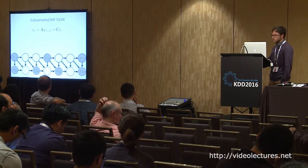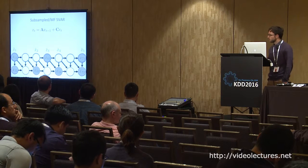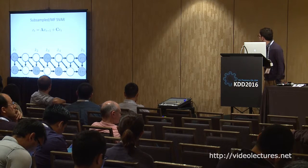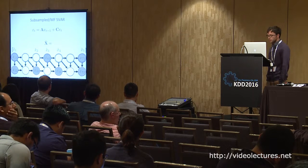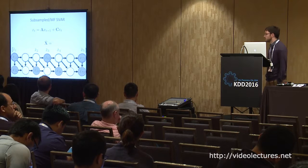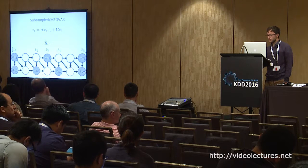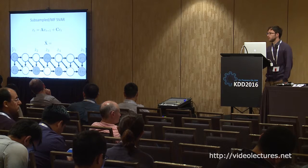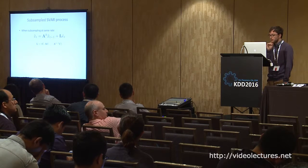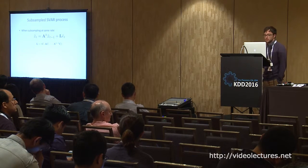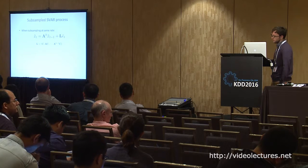In the subsampled case, we collect all observed data and call it X̃, where X is the true unobserved data. Combining them gives us the full observed dataset, capital X̃. In the particular case where all time series are subsampled at the same rate, we can rewrite the process evolution as: X̃_t equals A^K times X̃_{t-1} plus L times Ẽ_t. This is the evolution equation at the subsampled scale, where A is raised to the K-th power due to subsampling.